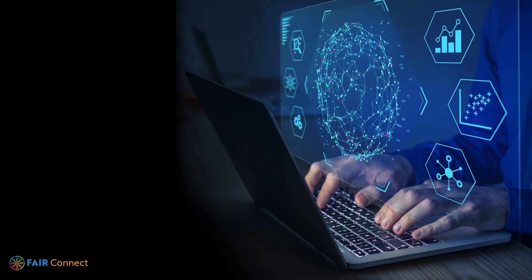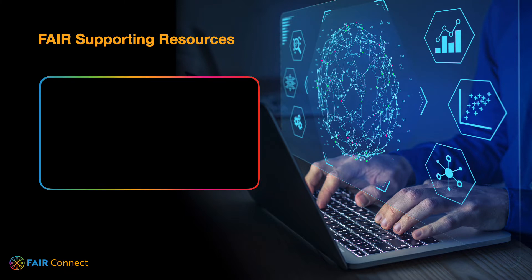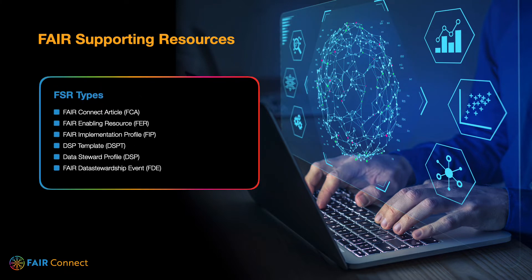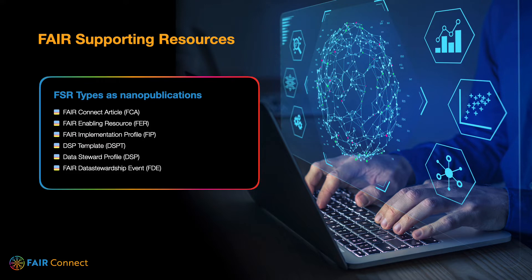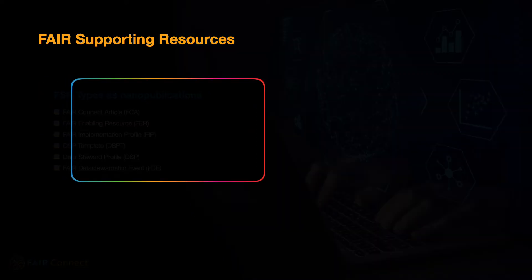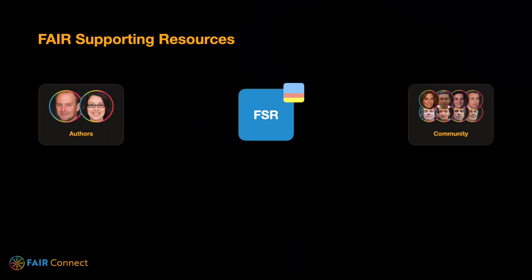FAIR Connect is a place for data stewards to share descriptions about the tools and methods they use in their day-to-day work. In FAIR Connect, these are called FAIR supporting resources. Each of these resources is made citable by unique identifiers linking to FAIR metadata in the form of machine-actionable nanopublications.